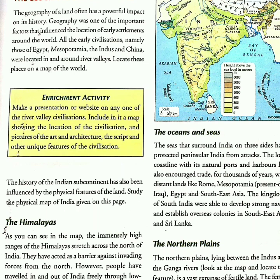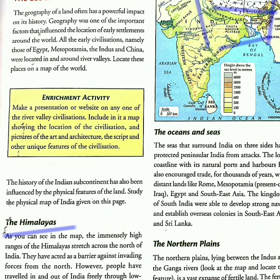The Himalayas. In the map of India, locate the Himalayas — here it is written 'The Himalayas.' The immensely high ranges of the Himalayas stretch across the north of India. These high Himalayan ranges acted as a barrier for anyone who wanted to invade India. Invade means to enter a country with an army in order to attack and take control of it. However, people travelled in and out of India freely through passes. Passes were the low-lying portions along the north-western portions of the Himalayas. Even though most of the people were traders and travellers, invaders have also entered India through these passes.